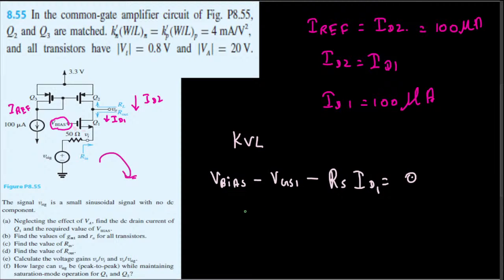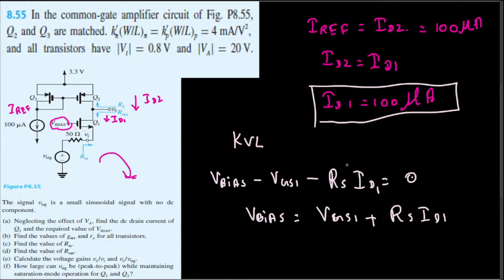So we are interested in V_bias. From this equation, V_bias is equal to V_GS1 plus R_S times I_D1. We have R_S available, I_D1 available. We don't know V_GS1, but we know I_D1. From this one we can find V_GS1 because if you look at the current equation, let's put the current equation so you can see it.